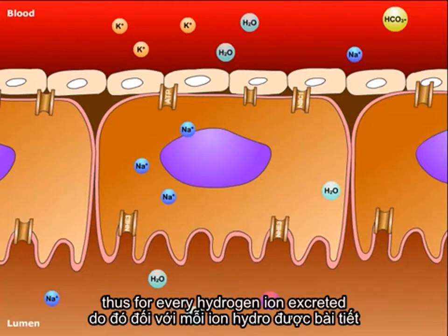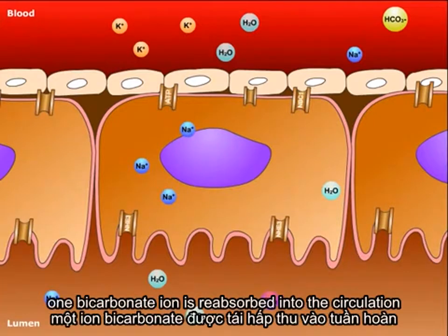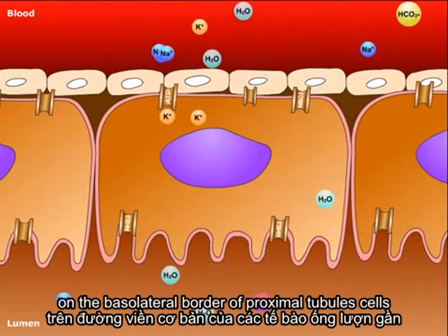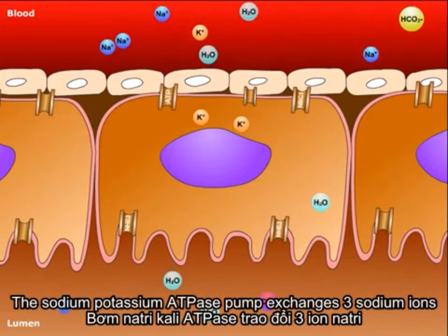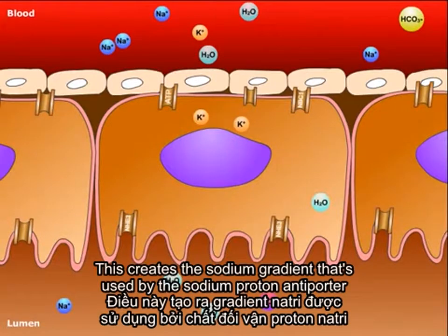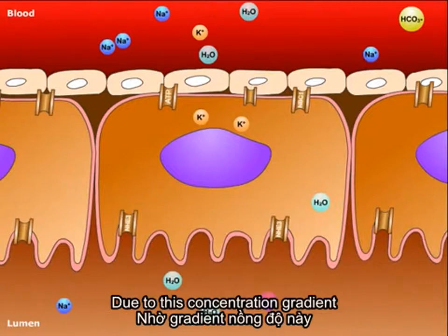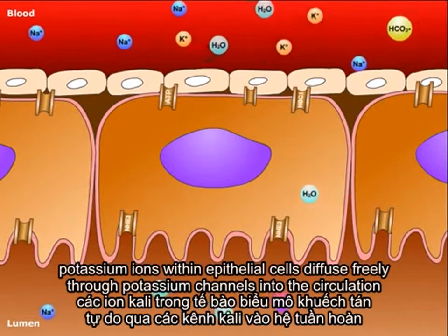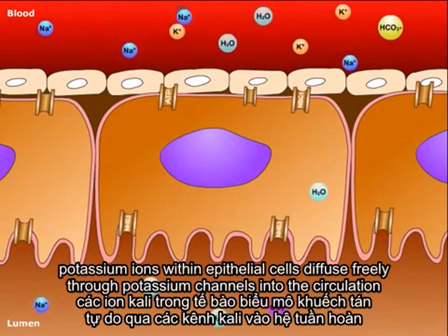Thus, for every hydrogen ion excreted, one bicarbonate ion is reabsorbed into the circulation. On the basolateral border of proximal tubule cells, the sodium-potassium ATPase pump exchanges three sodium ions for every two potassium ions. This creates the sodium gradient used by the sodium-proton antiporter. Due to this concentration gradient, potassium ions within epithelial cells diffuse freely through potassium channels into the circulation.